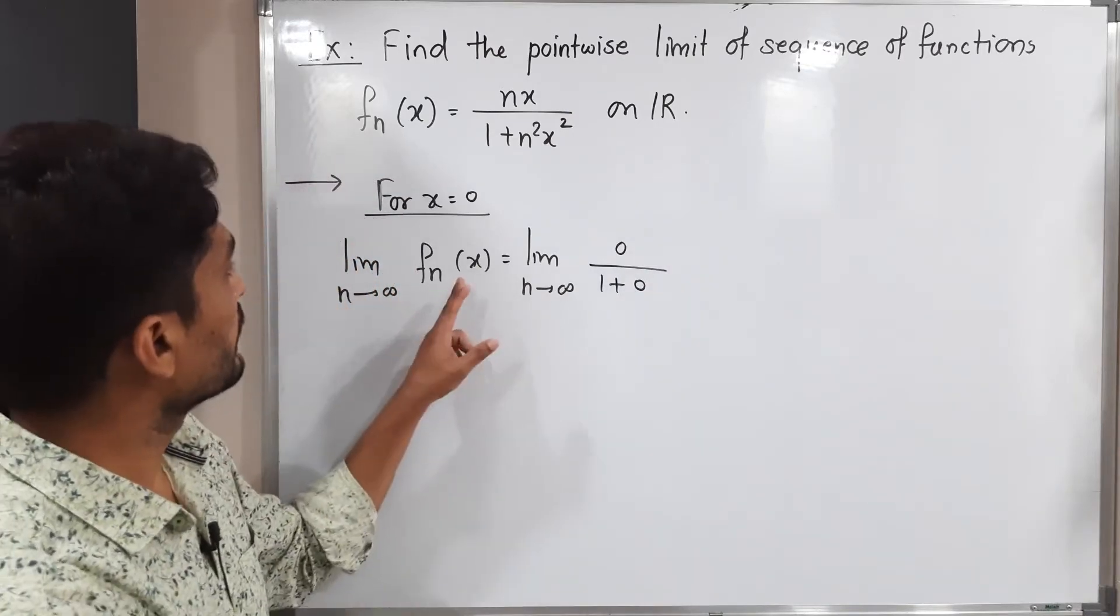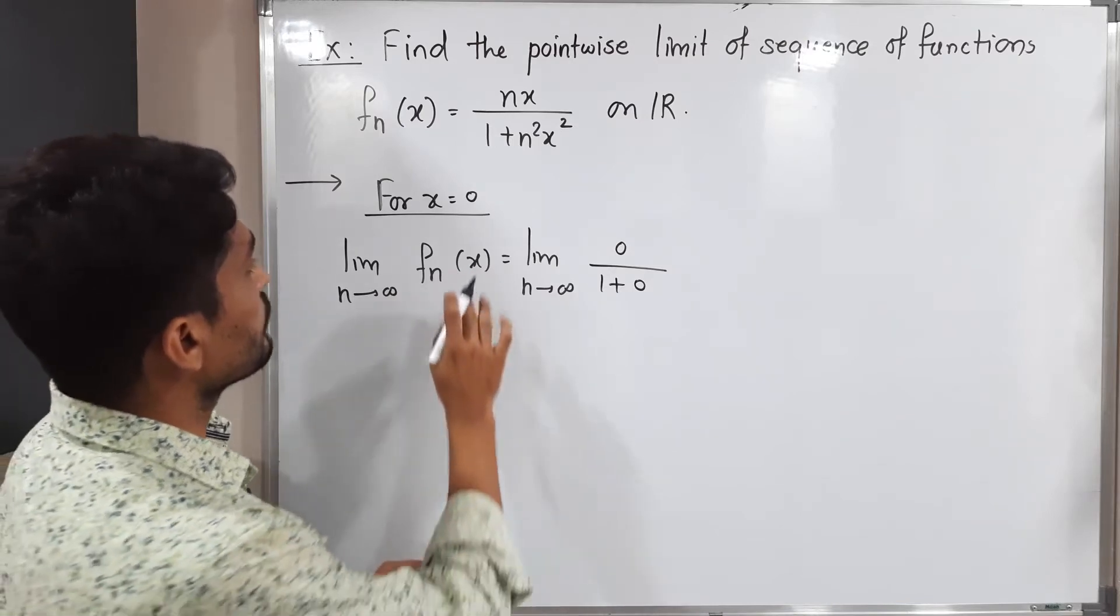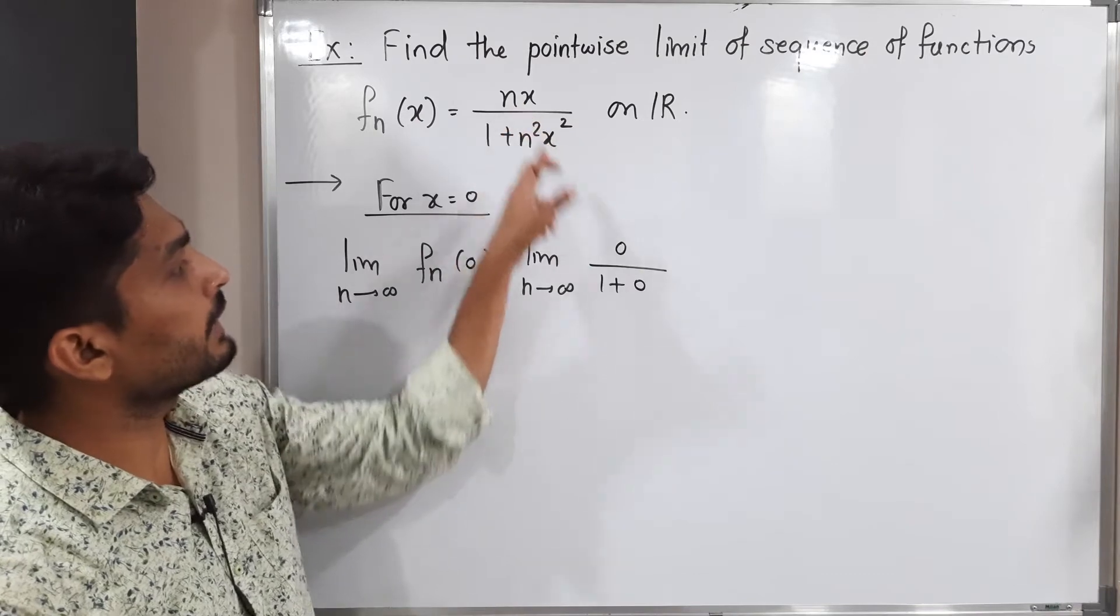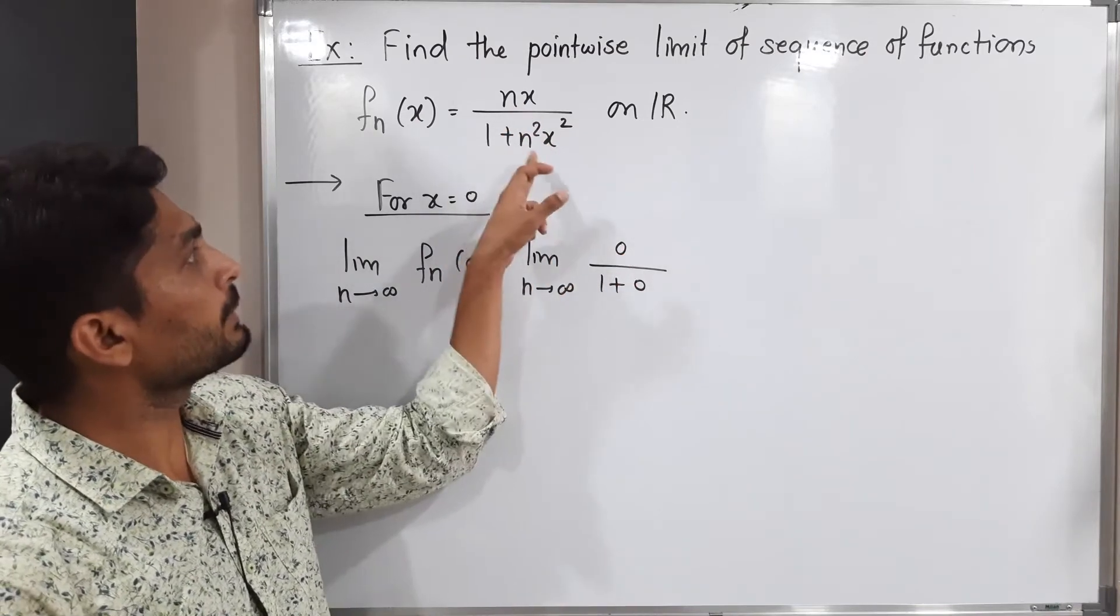We are getting the point f_n(x), but actually x is 0, so I should write here 0. If I put x=0, we will have 0 at numerator, 1 plus 0 at denominator.